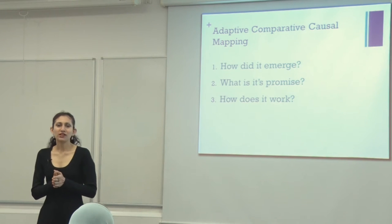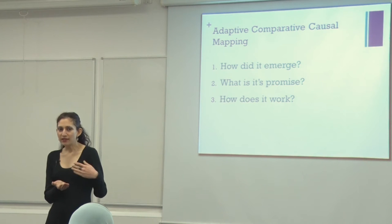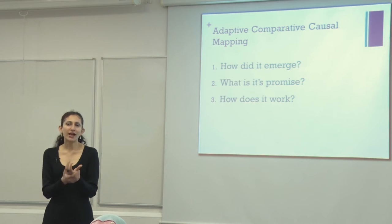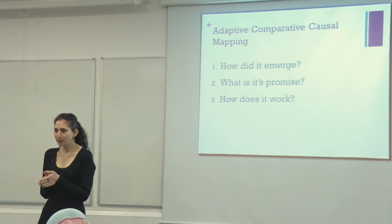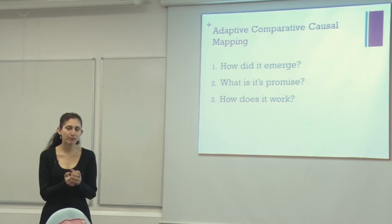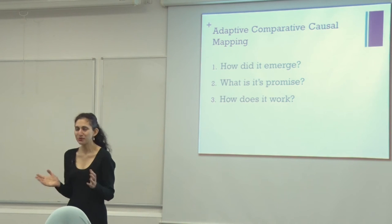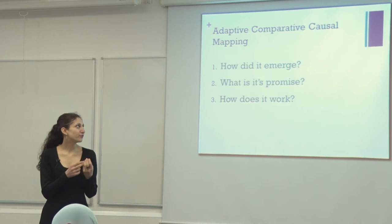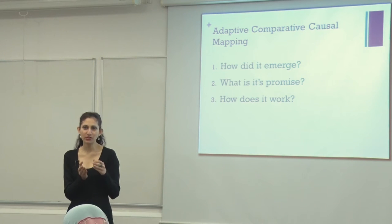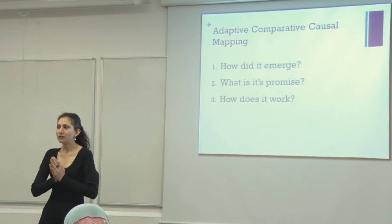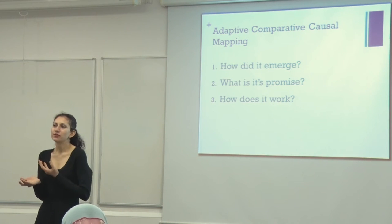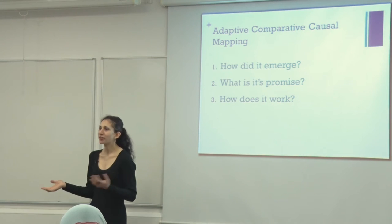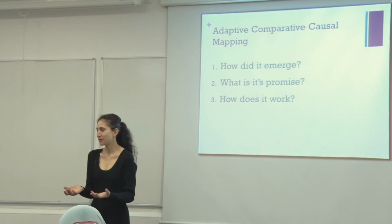Today I'm not going to go into detail about my research, but I'm going to introduce a method called Adaptive Comparative Causal Mapping that emerged through my research about software development teams. I've crafted my message in three stories: first, how did this method emerge? Second, how it helped us and what promise it offers to future researchers? And third, how does it actually work, so you can go home and start using it.